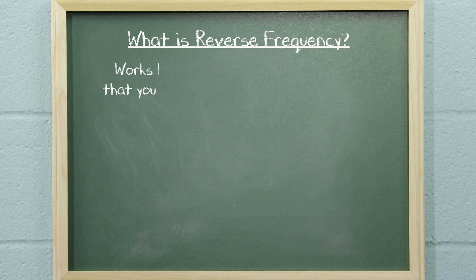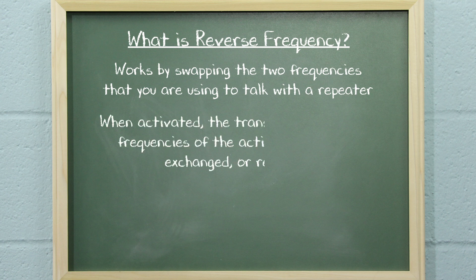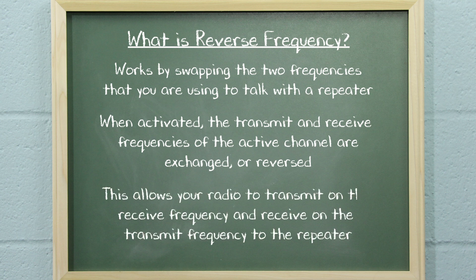Reverse frequency works by swapping the two frequencies that you are using to talk with a repeater. When reverse frequency is activated, the transmit and receive frequencies of the active channel are exchanged or reversed. This allows your radio to transmit on the receive frequency and receive on the transmit frequency to the repeater.